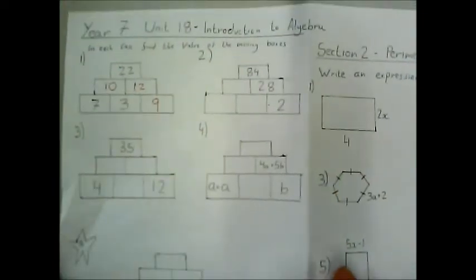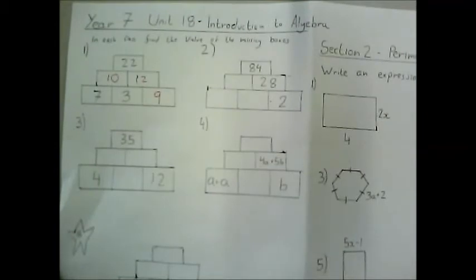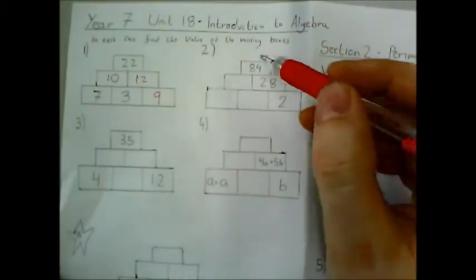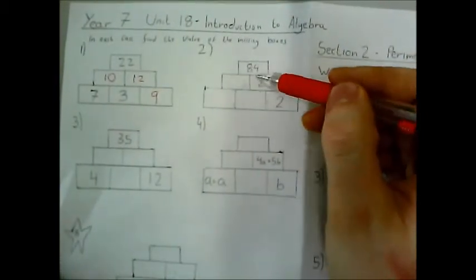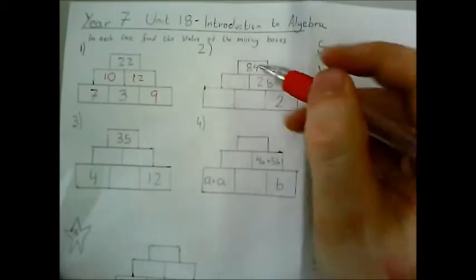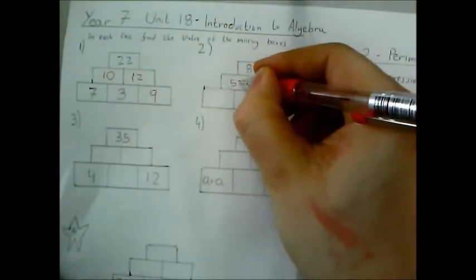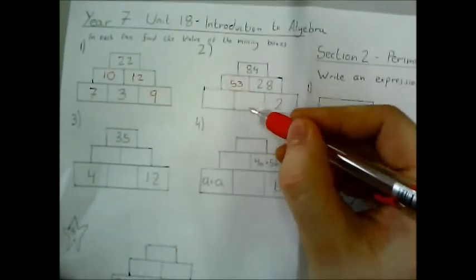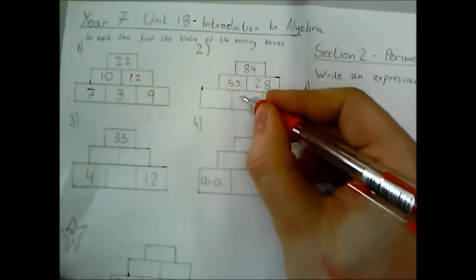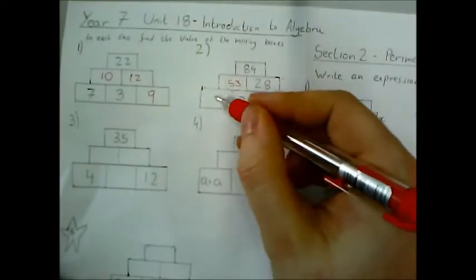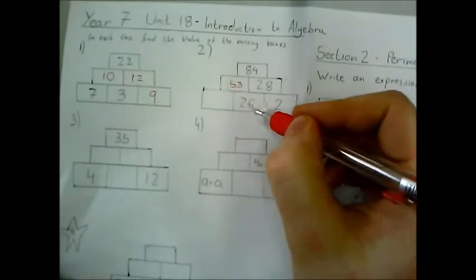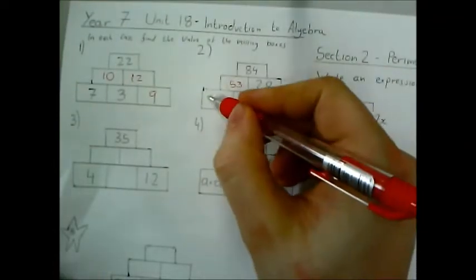Let's look at question 2. Very similar thing, but this time with some slightly larger numbers. So again to work out this box, it's going to be 84 take away 28, which is 53. And in this box is 28 take away 2, so 26. And in this box is 53 take away 26, which is 27.